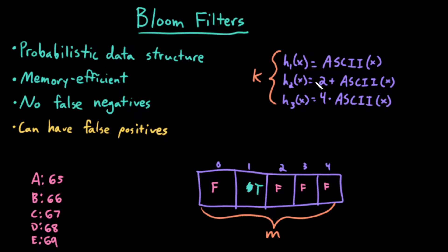Then for the second hash function, 2 plus the ASCII value of b would be 68, 2 plus 66. 68 mod 5, the length of my array, is 3, so I would set index 3 to true as well.